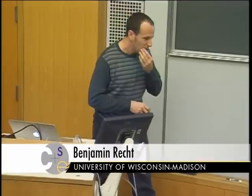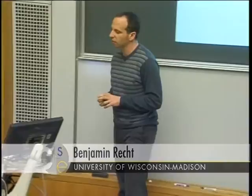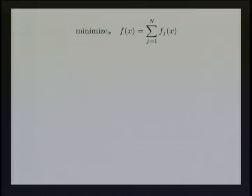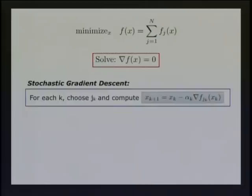What I want to talk about today is a very simple problem, or at least it looks simple, but it's also very fundamental: minimizing a function given by a sum of many different terms. What we learn in undergraduate calculus is that all we have to do is find a place where the gradient is equal to zero. The algorithm I'm going to spend almost all of today on to solve that equation is called stochastic gradient descent, which you may have heard of.